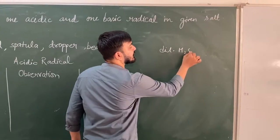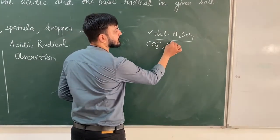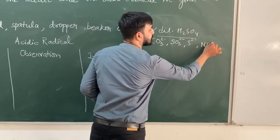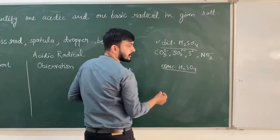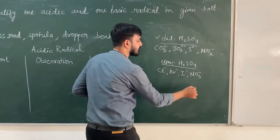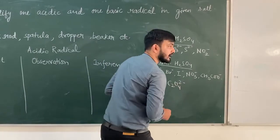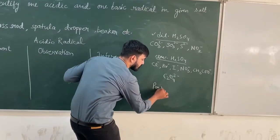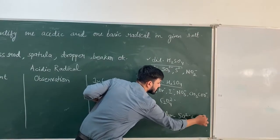The first part is reaction with dilute H₂SO₄. The ions you will be able to identify with dilute H₂SO₄ are carbonate, sulfide, and nitrite. The ions identified using concentrated H₂SO₄ are chloride, bromide, iodide, nitrate, acetate, and oxalate. If you are still not able to figure out which ion is present, there is a third type — the particular test — which is only for sulfate and phosphate.